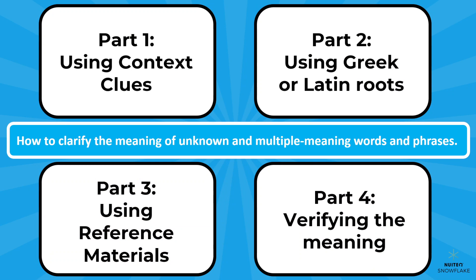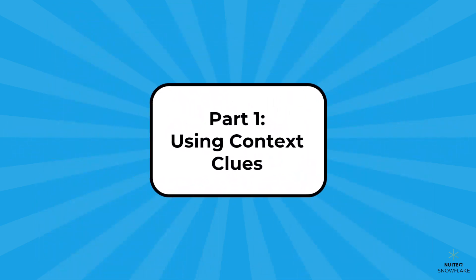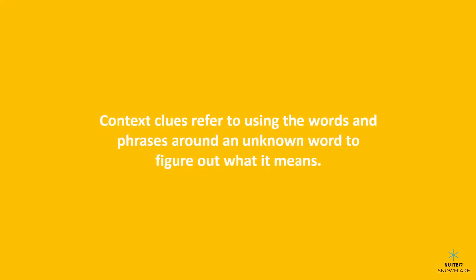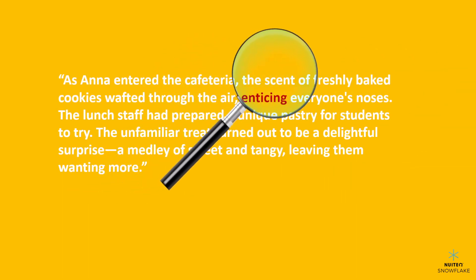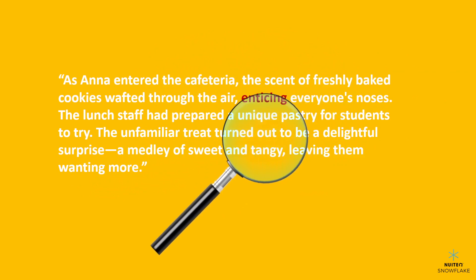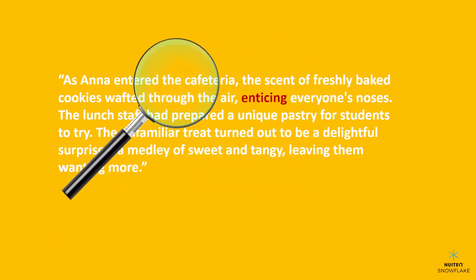Part 1: Using Context Clues. Context clues refer to using the words and phrases around an unknown word to figure out what it means. They're like little hints that the author gives us in a sentence or paragraph to help us figure out what a word means. Imagine you're playing a game of Guess Who, but with words instead of people. Let's check out some examples.